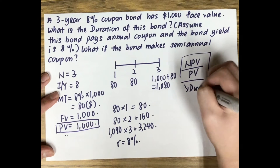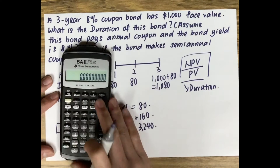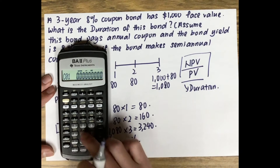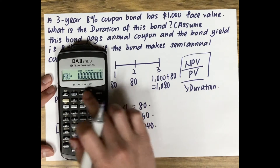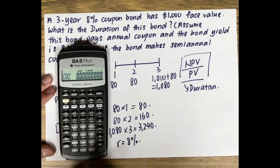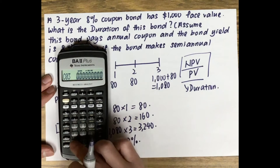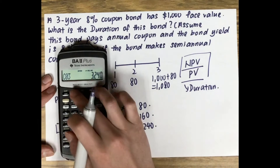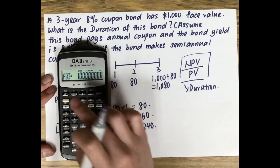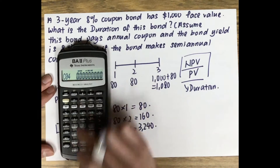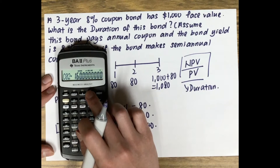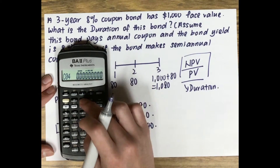Press the CF key. Leave CF0 blank and press down. CF1 = 80, press Enter and Down. Frequency is 1, press Down again. CF2 = 160, press Down twice. CF3 = 3,240, press Enter and Down. Frequency is 1, press Down. Verify: CF0 = 0, CF1 = 80, CF2 = 160, CF3 = 3,240.